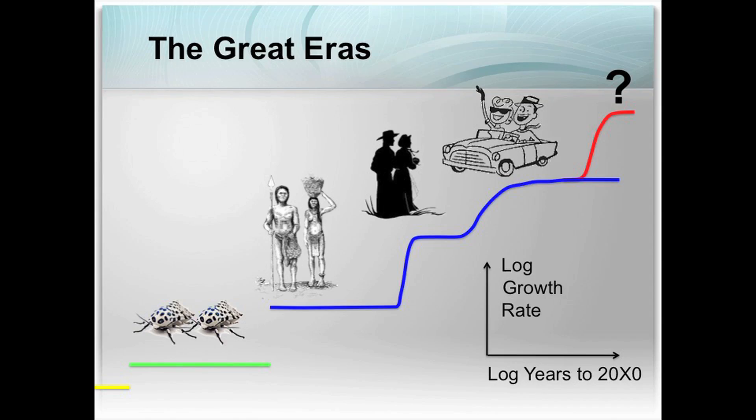Before that, it shows animals and genes. The key pattern to see here is that all of history is well summarized by exponential growth modes where the y-axis is the growth rate. During each era, it grew very steadily until, within less than a previous doubling time, the growth rate increased by a factor of 50 or more.